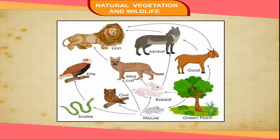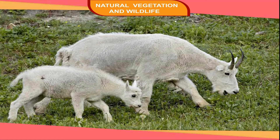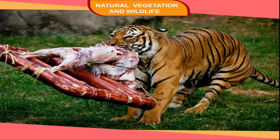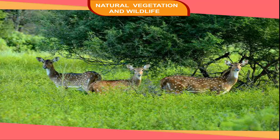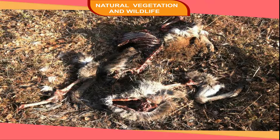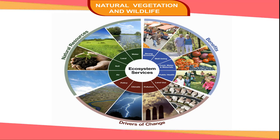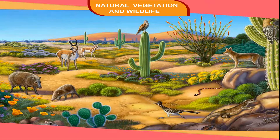Ecosystem. Living things need energy in the form of food. Animals like goats eat grass, and in turn they are eaten by animals like tigers. When these plants and animals die, microorganisms feed on their remains. The broken down remains release materials back to the environment for reuse. Thus, a life-supporting unit in nature where living things are dependent on each other and on the environment is called an ecosystem.